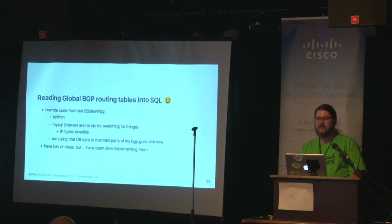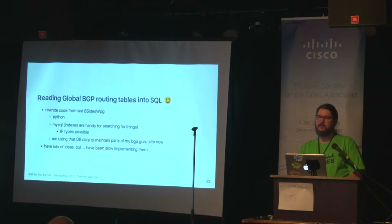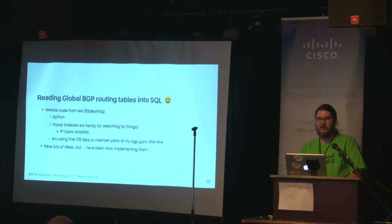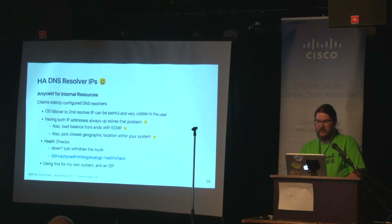I'm using that database to maintain parts of my bgp.guru site. I maintain a list of all the ASes in each province in Canada — whether they're active, advertising v4 or v6 — and some general stats on the number of ASNs that are active, how many have v4, how many have v6, v4 only, v6 only, etc. It's all really easy to generate those stats once the data is in a database. I have a lot of ideas on this but have been a bit slow implementing them.